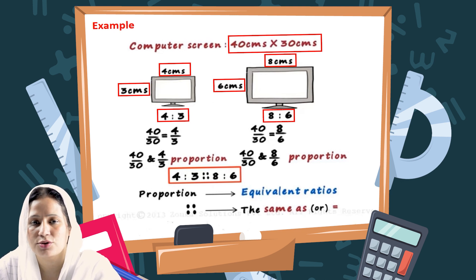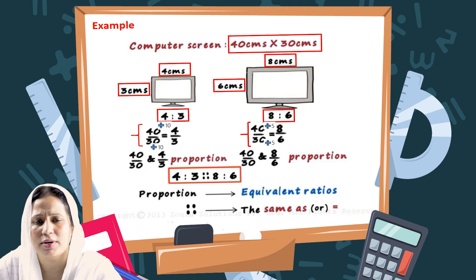Similarly, 8 by 6 is again 40 by 30. When we divide 40 and 30 by 5, we get 8 by 6. What did you notice? You notice that 40 by 30, 4 by 3, and 8 by 6 are equal. What we are trying to do is maintain or equal the fractions in proportion. So proportion is nothing but equivalent ratios.